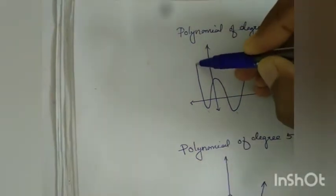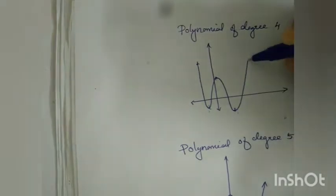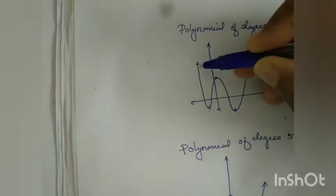For example, if we have 5 points, we can construct a polynomial passing through these points, and it is a fourth degree polynomial.